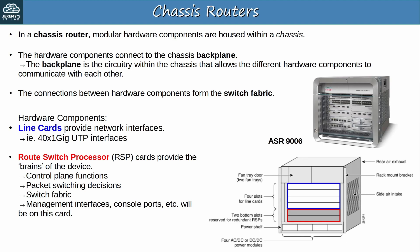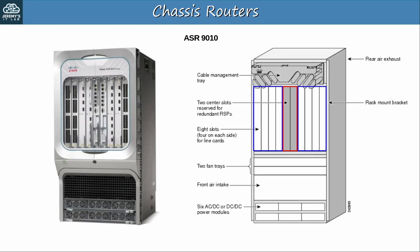Here's a photo and diagram of another ASR model, the ASR-9010. As the name suggests, there are 10 slots in total. The two middle ones are for RSP cards — the brains of the device — and the other 8 are for line cards, which provide network interfaces.